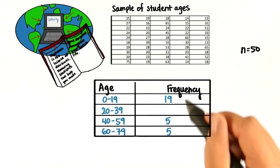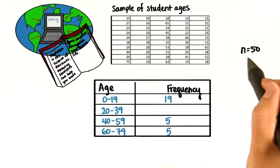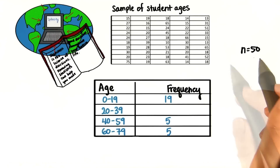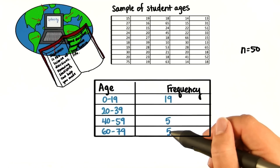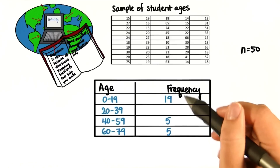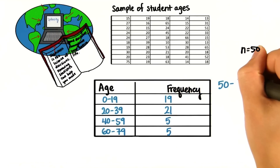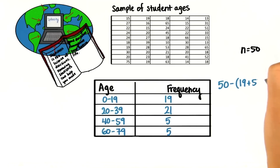Instead, we know that all of these should add to 50 because that's the total number of students in our sample. 19 plus 5 plus 5 is 29, and 50 minus 29 is 21. So in other words, we did 50 minus (19 plus 5 plus 5).